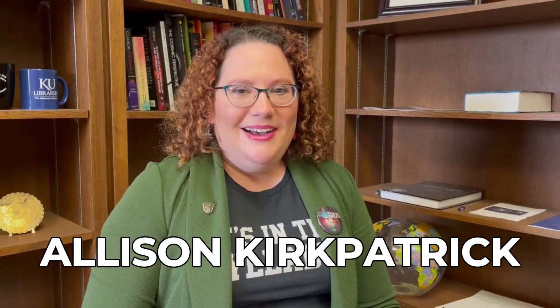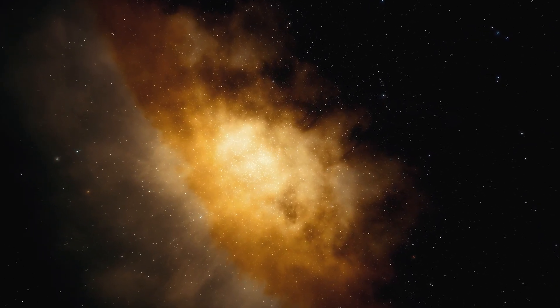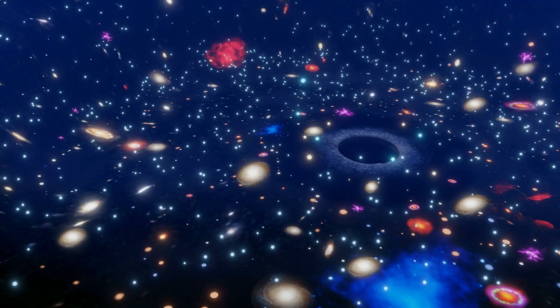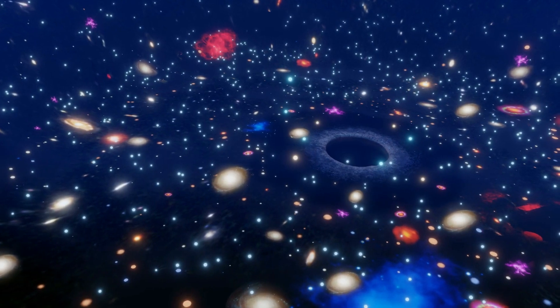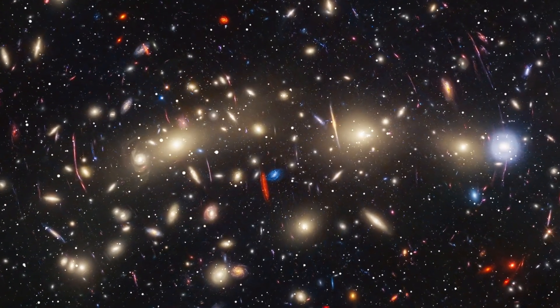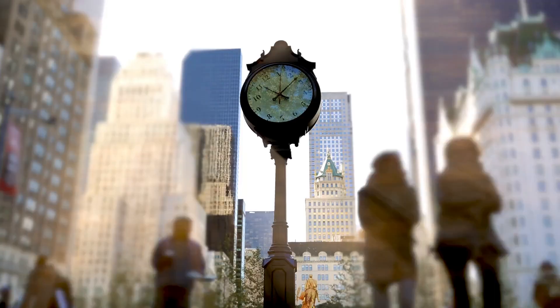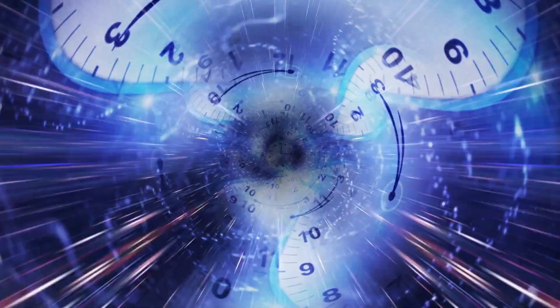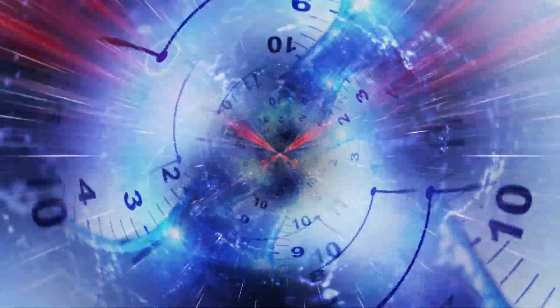Take Alison Kirkpatrick from the University of Kansas, for example. She's scratching her head over these images, wondering if everything she thought she knew about galaxies is wrong. Why? Because these galaxies look nothing like what the Big Bang theory says they should. They're tiny, smooth, and way older than they have any right to be.